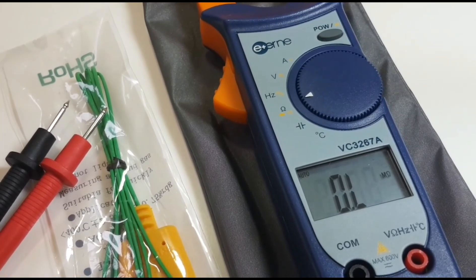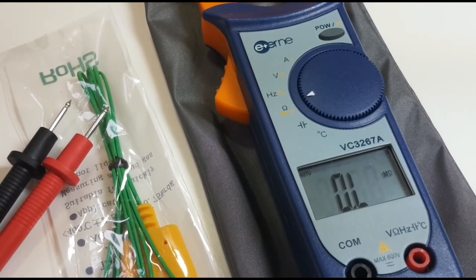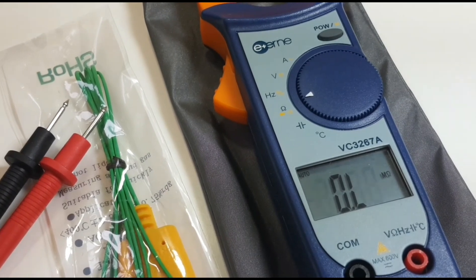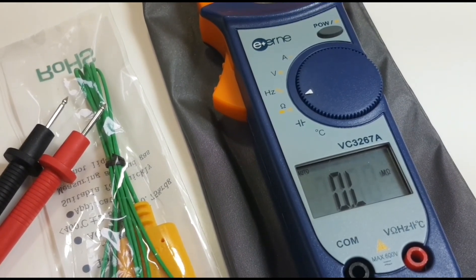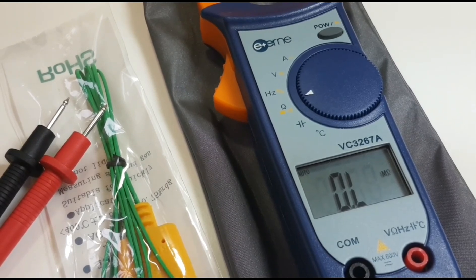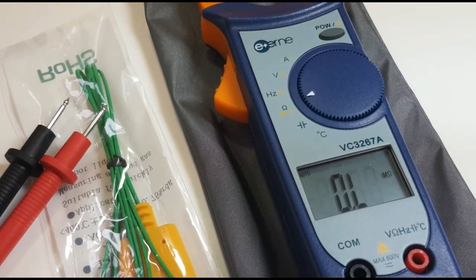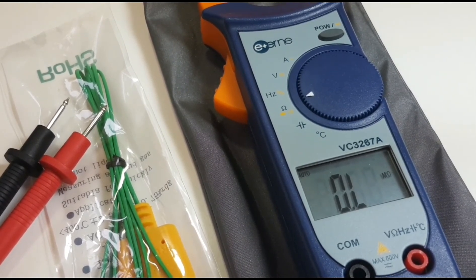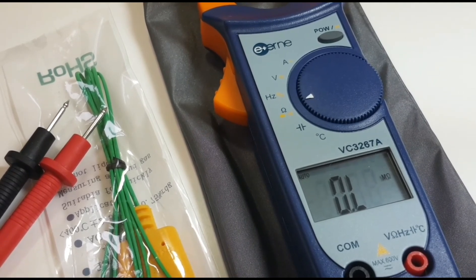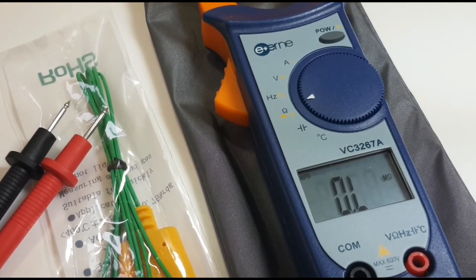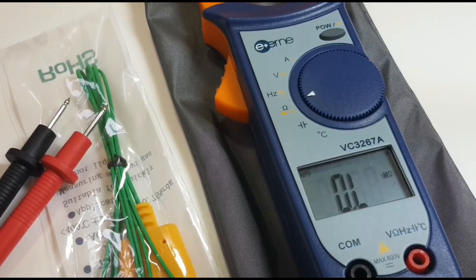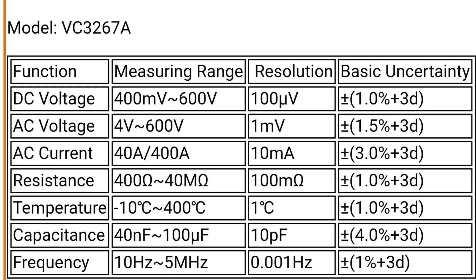E1 VC3267A clamp meter. Now what makes this special is the fact that it's rather cheap. I picked this up for about 11 to 12 bucks, and that's a really good price when it comes to clamp meters. But it's cheap on price, not cheap on features. This guy is loaded.